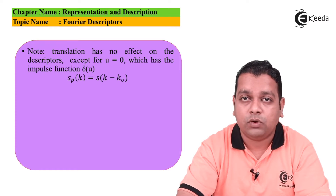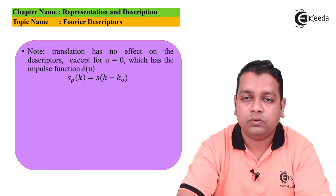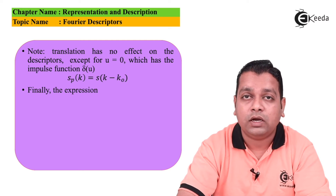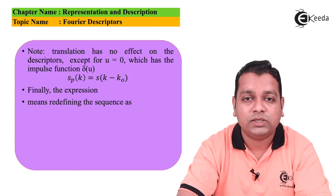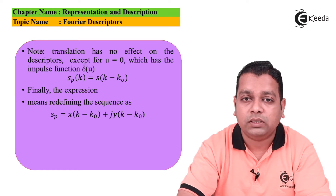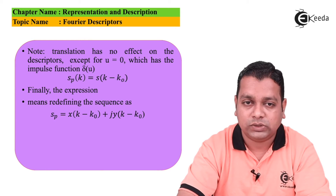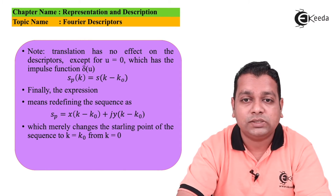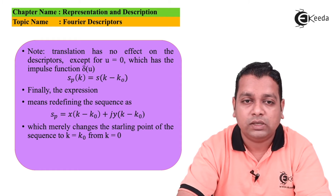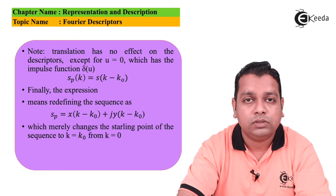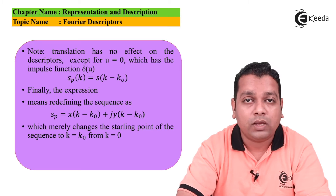The expression s_p(k) = s(k − k_0) means redefining the sequence as s_p = x(k − k_0) + j·y(k − k_0), which merely changes the starting point of the sequence from k = 0 to k = k_0. I hope this discussion has benefited you in clearing the concepts regarding Fourier descriptors.